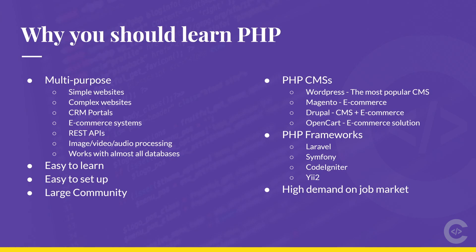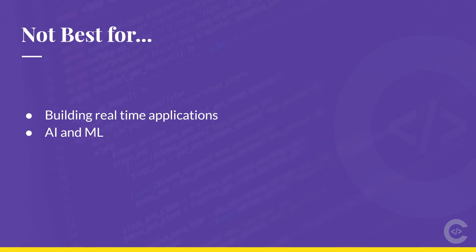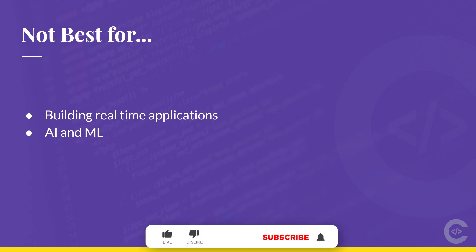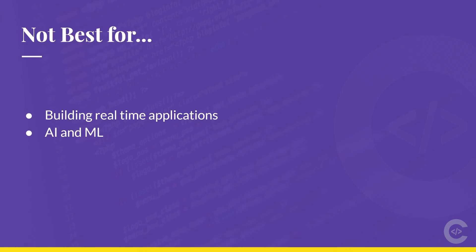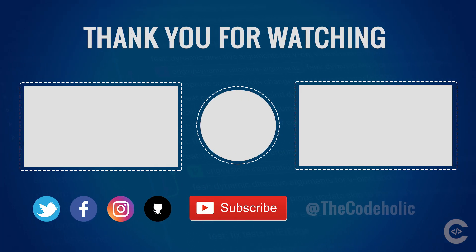One of the last reasons to learn PHP is that it has high demand on the job market. However, PHP is not the best choice for real-time applications or for artificial intelligence and machine learning — Node.js is better for real-time apps and Python is better for AI and ML. Now it's time to set up our working environment and start writing Hello World.